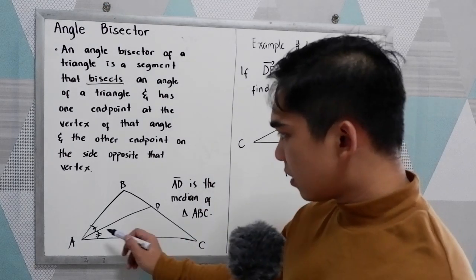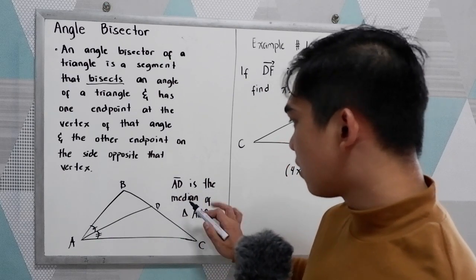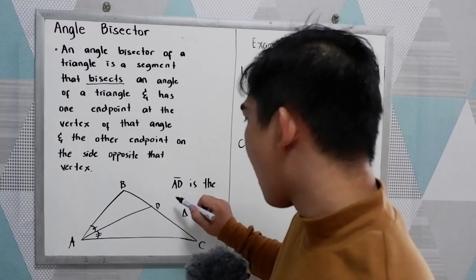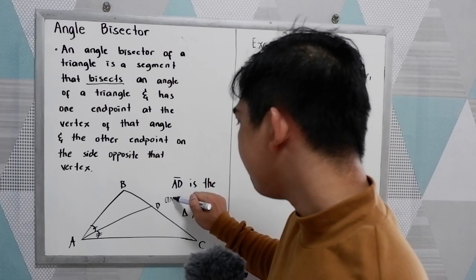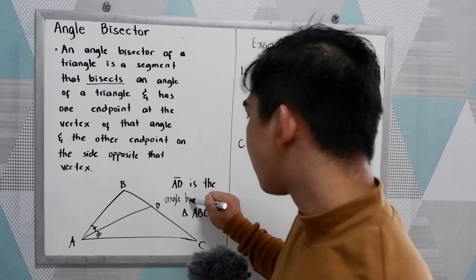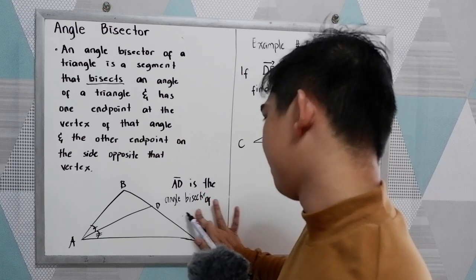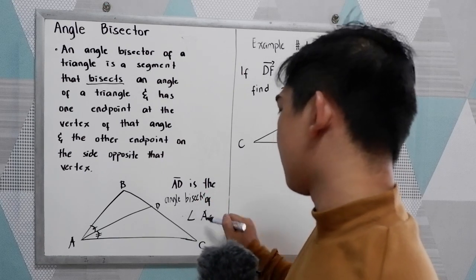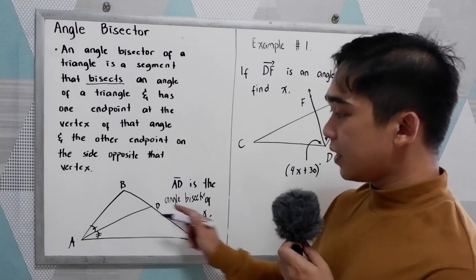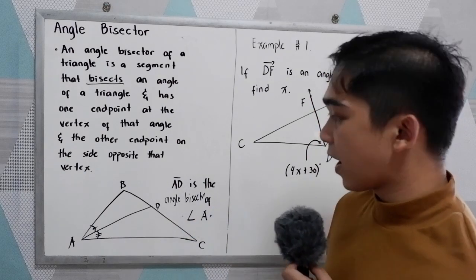So let's say AD is the angle bisector of angle A. AD is the angle bisector of angle A.